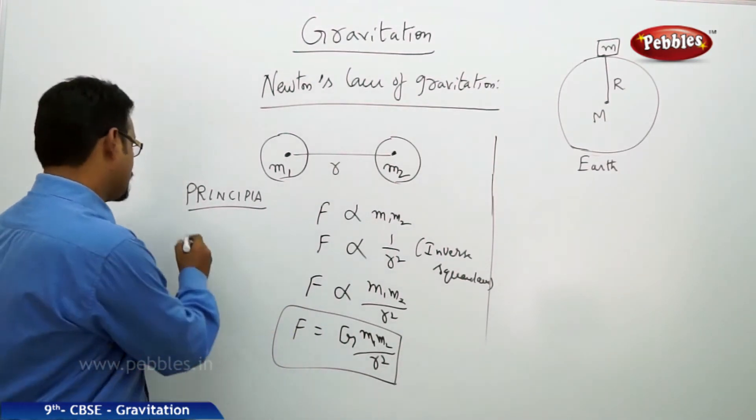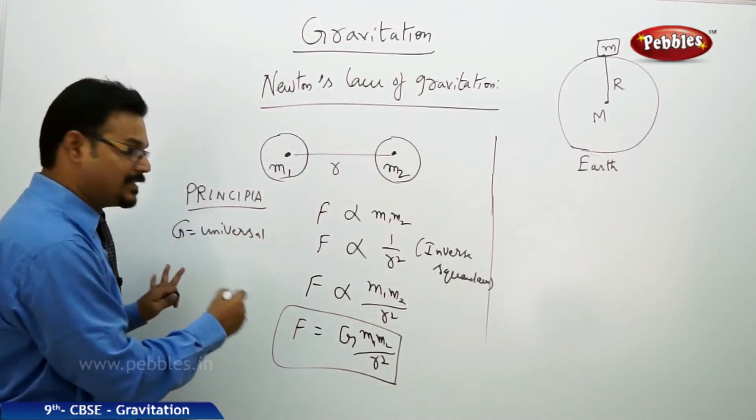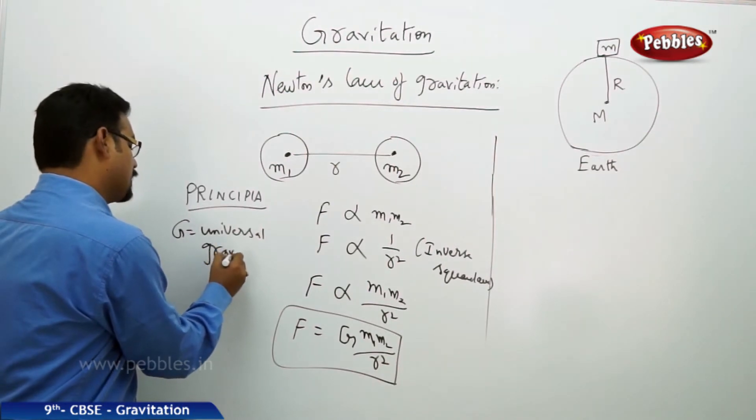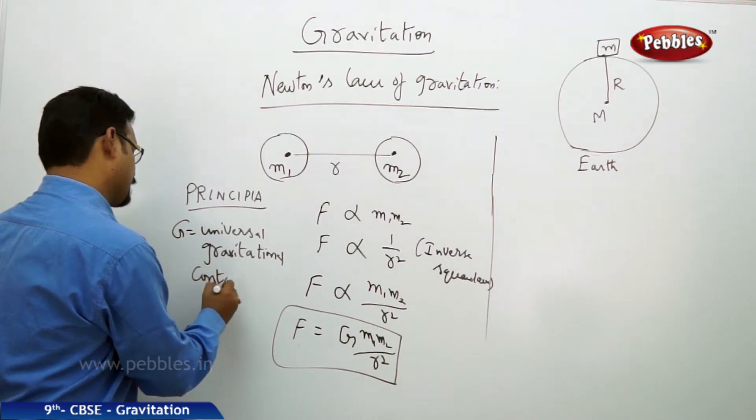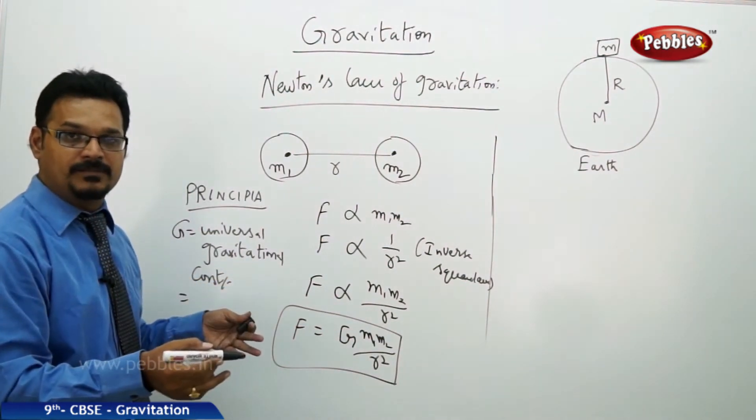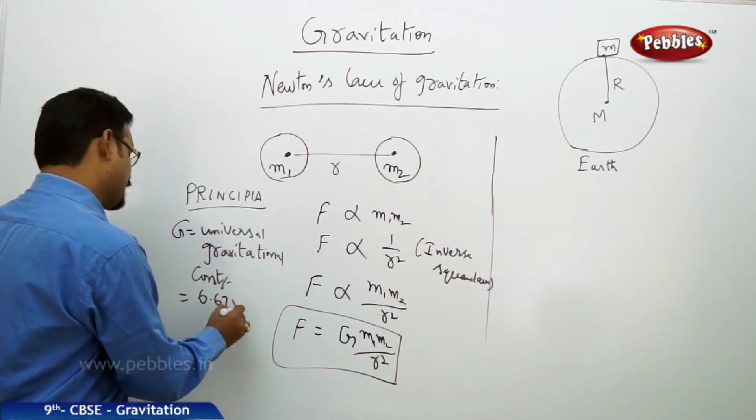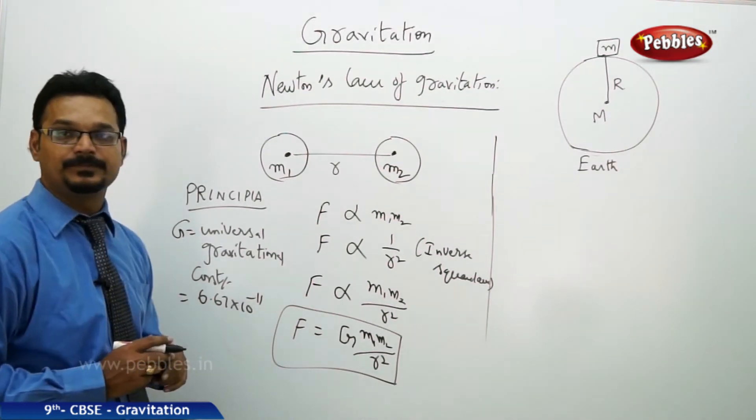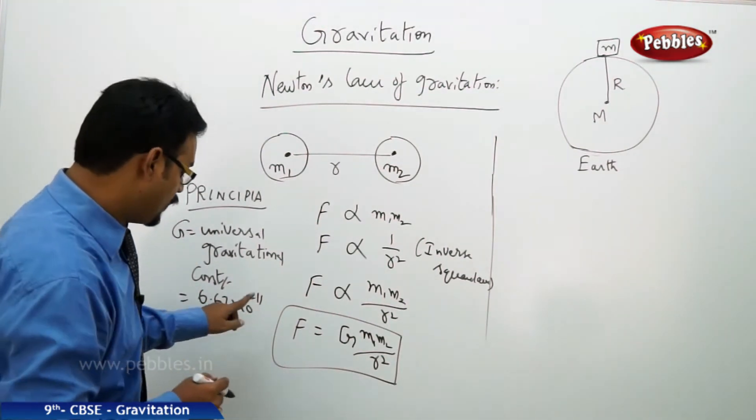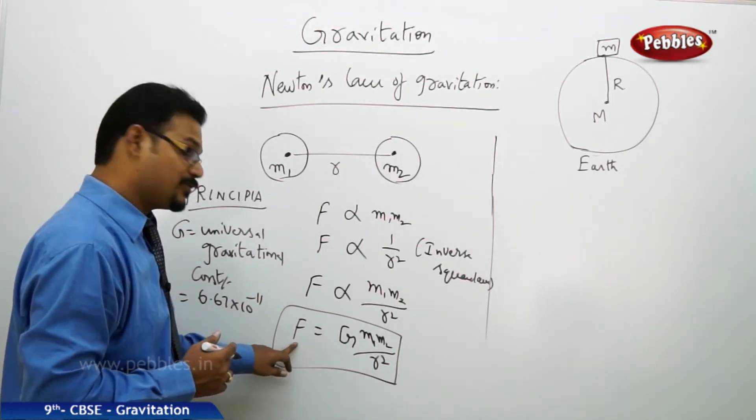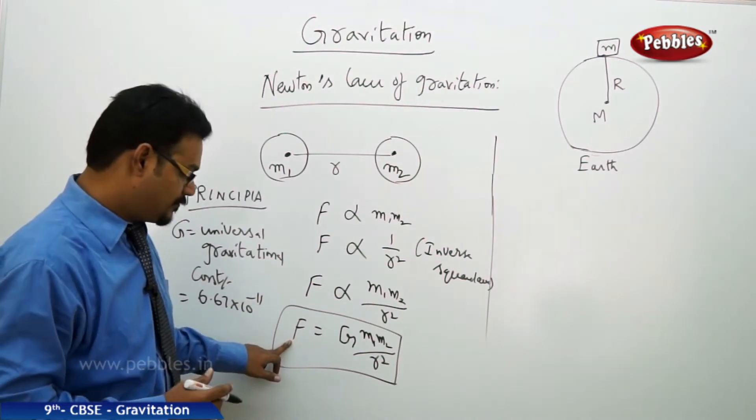G is called universal gravitational constant, and it's a constant number: 6.67 times 10 to the power minus 11. And G has a unit.